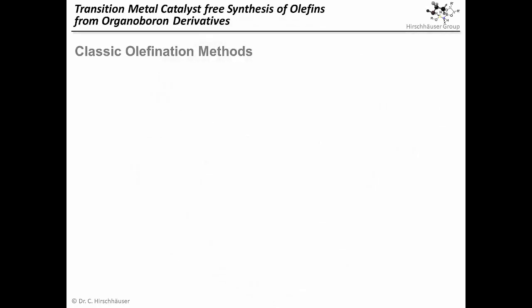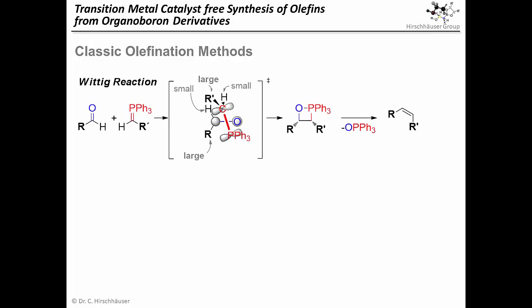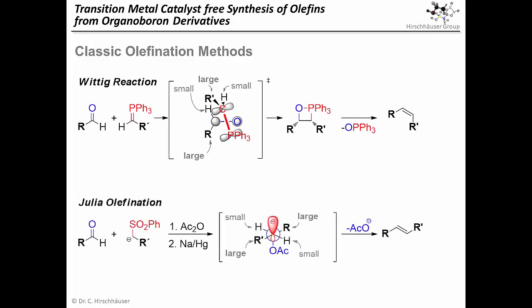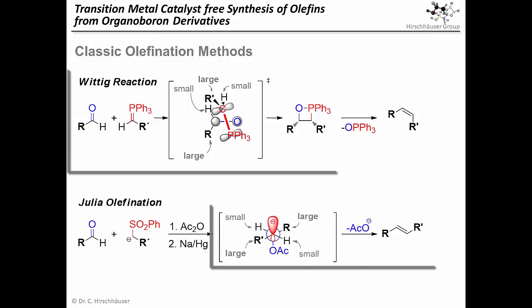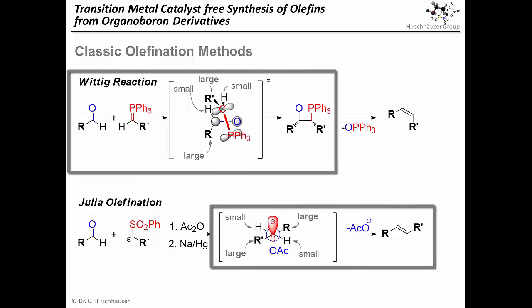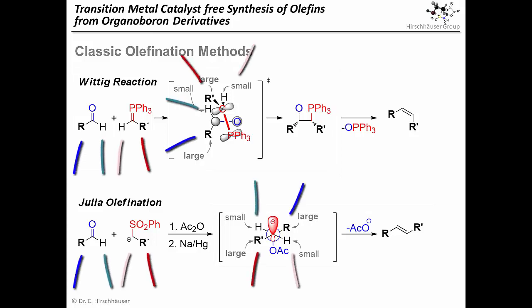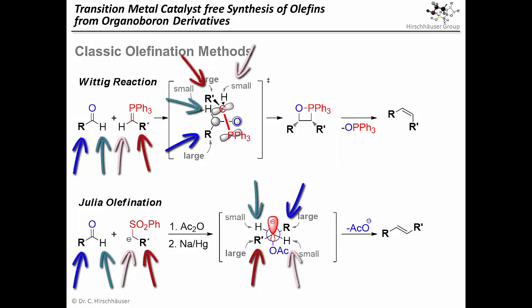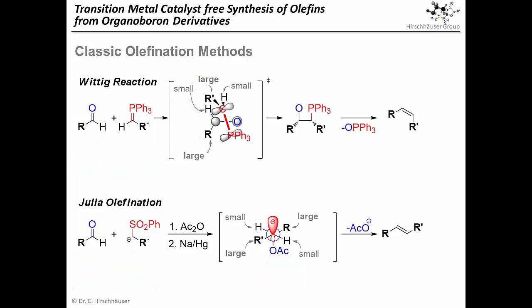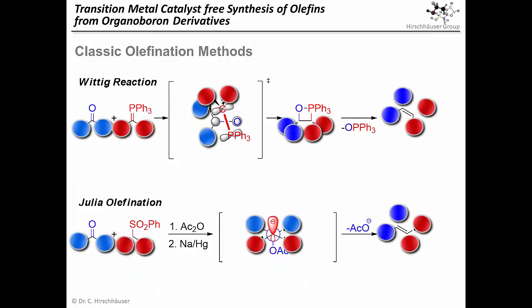Let us think about making alkenes stereoselectively. Probably your textbook knowledge will immediately point you to solutions like the Wittig reaction for electron-rich Z-alkenes or maybe a Julia-type olefination for E-alkenes. But if we think for a moment about the stereogenic step in these reactions, we see that the selectivity for both methods fundamentally requires some noticeable difference in the substituents. For the synthesis of higher substituted olefins, if the substituents are too similar in size, how should their steric non-difference lead to some selectivity?